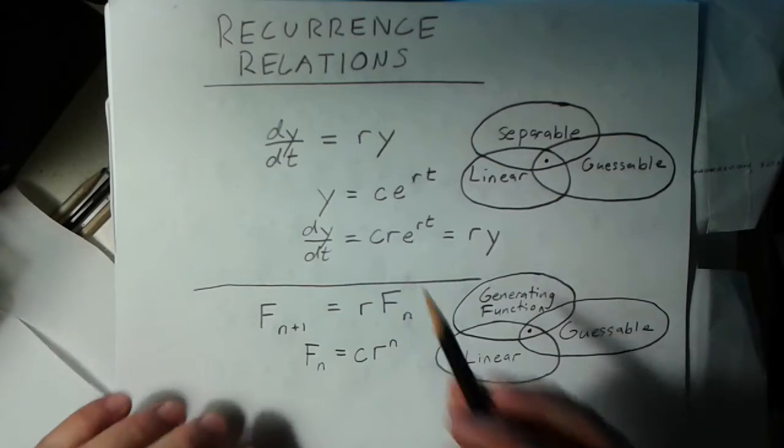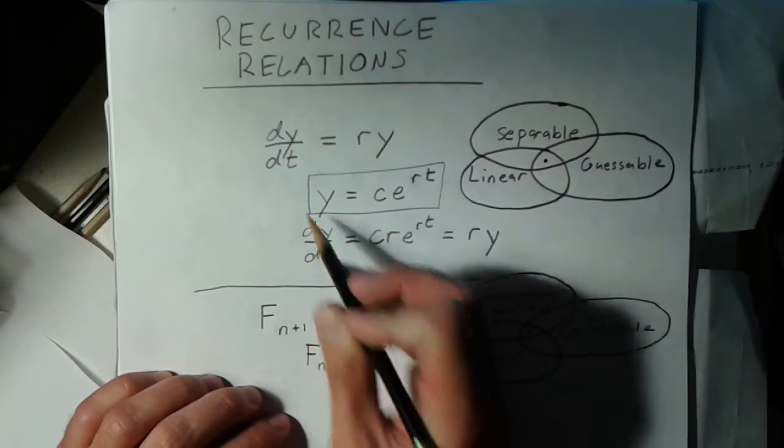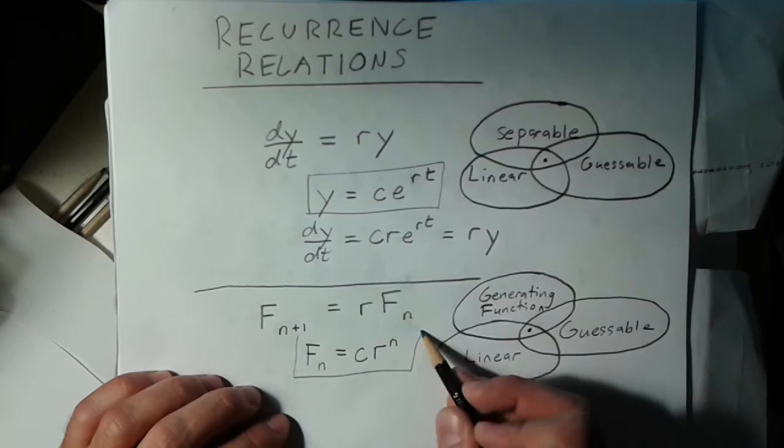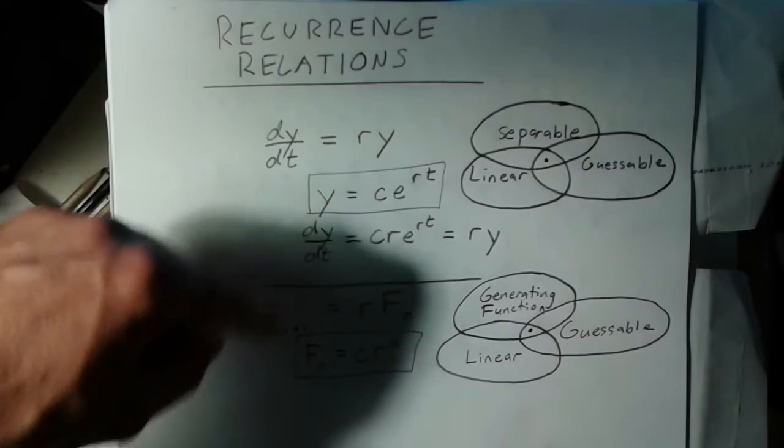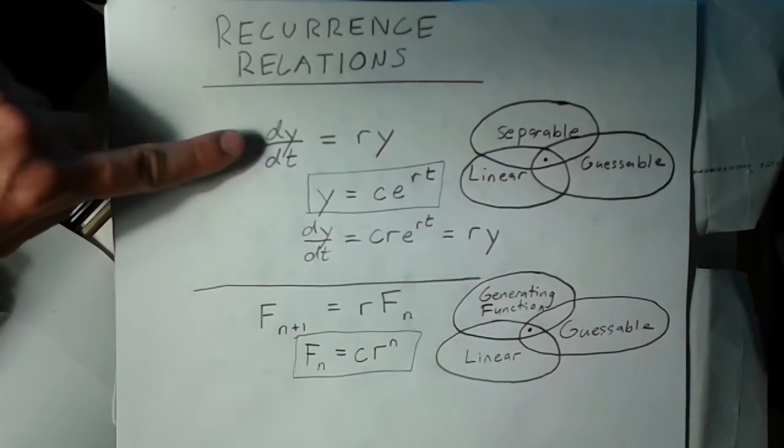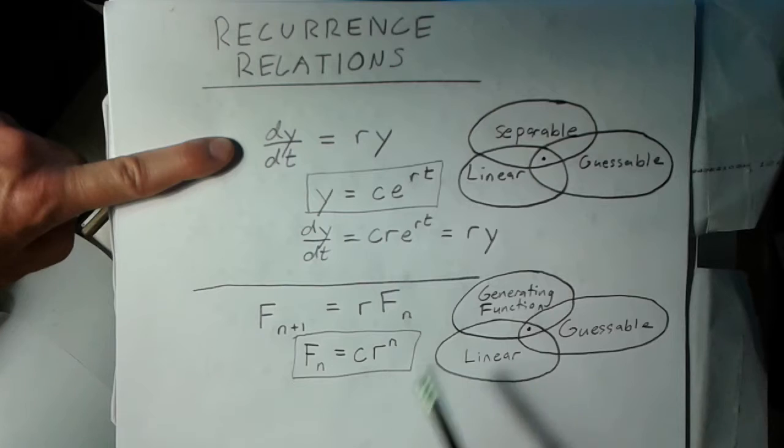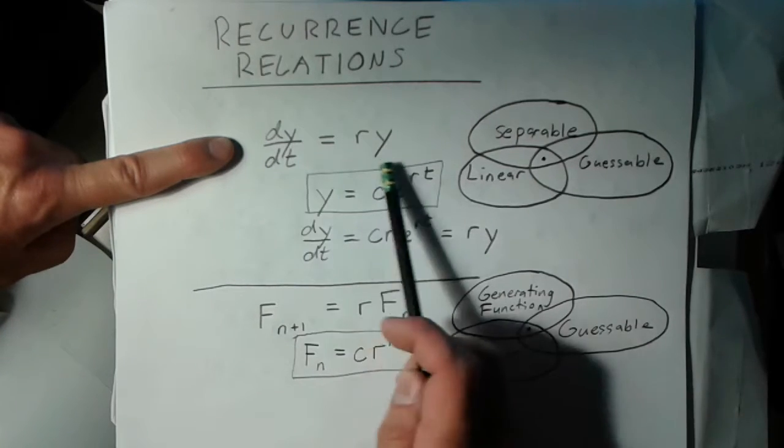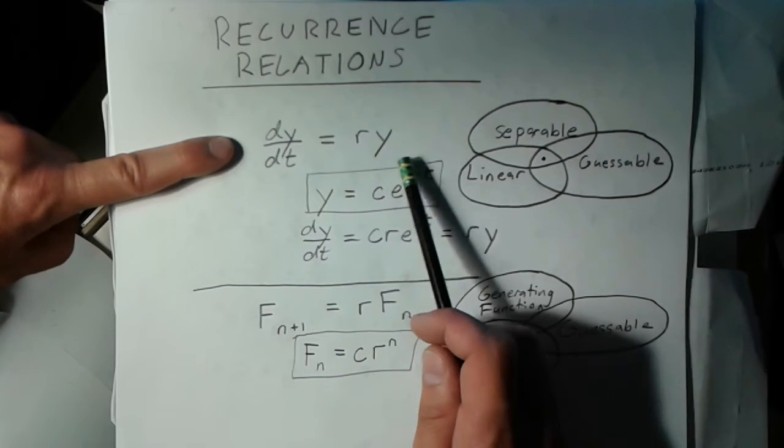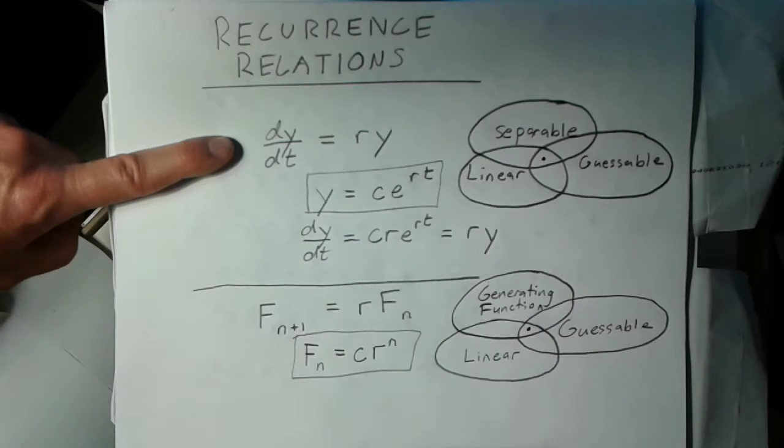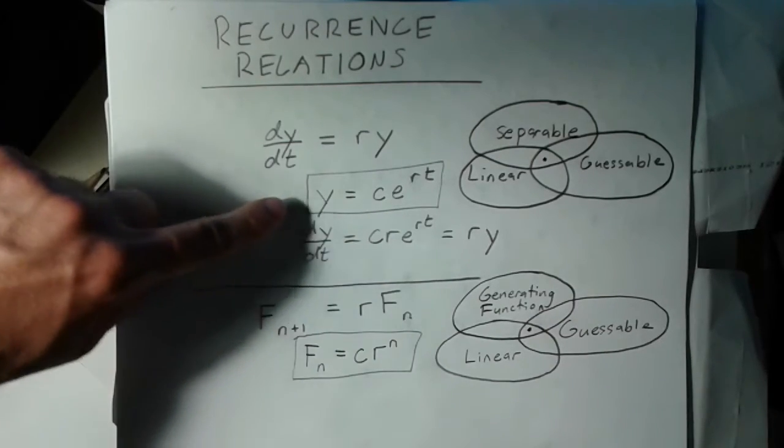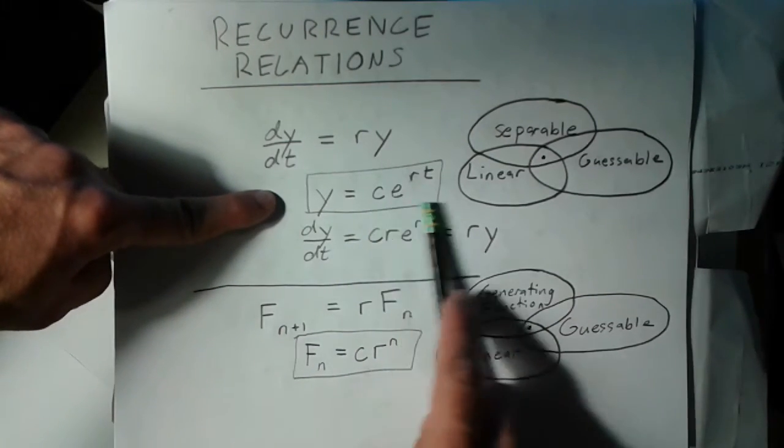So the differential equation had a very similar solution to the recurrence relation. And actually if you look at what this is saying, this differential equation here, we're just saying, when we pose this as a question we're asking, what functions are proportional to their derivatives? And the answer we get is, all exponential functions.